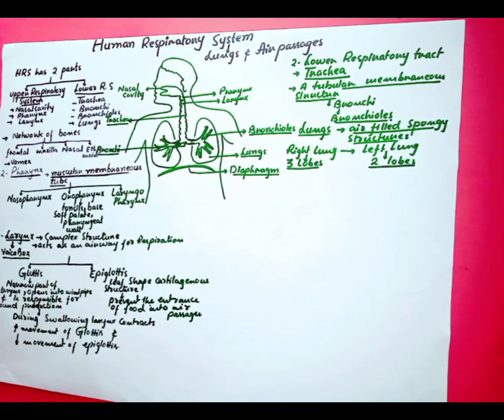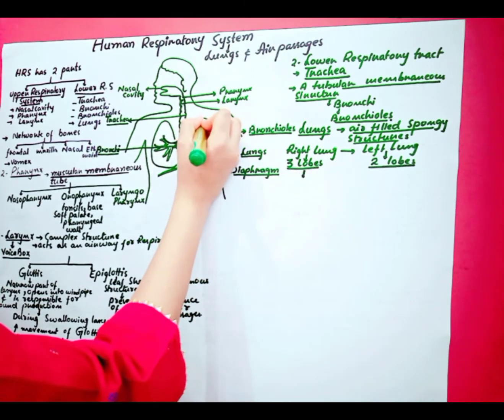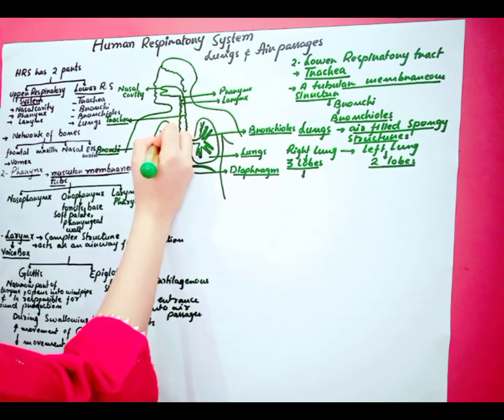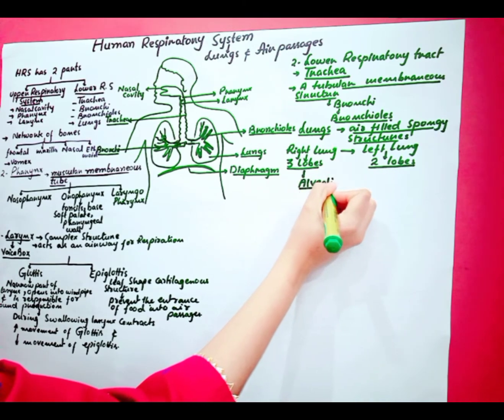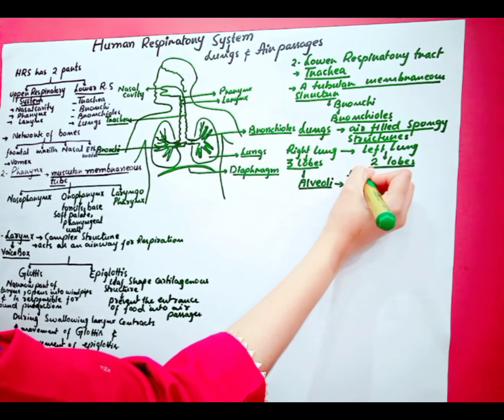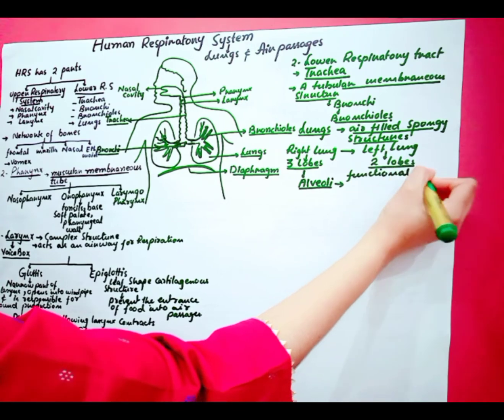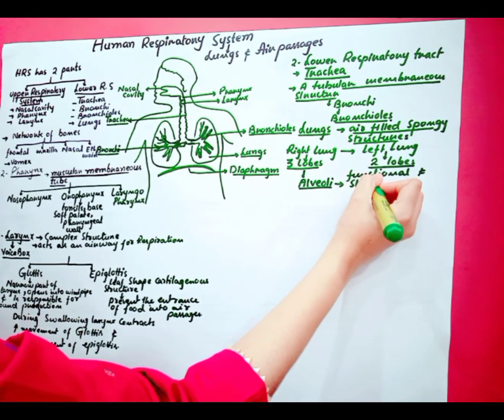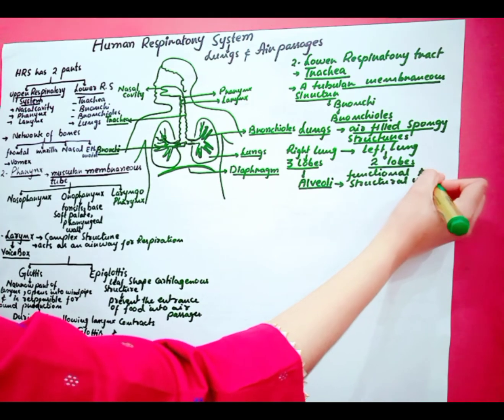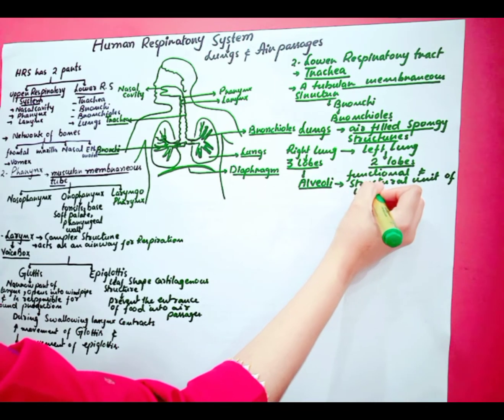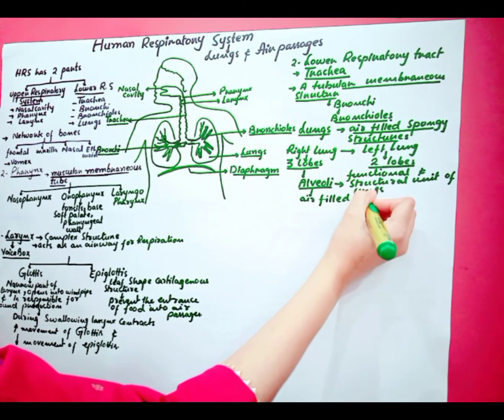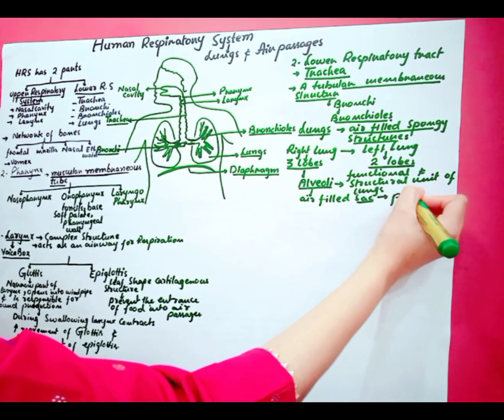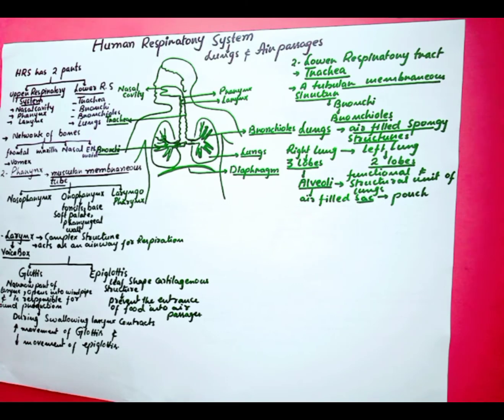Within the lungs, these bronchioles eventually end up in a cluster of microscopic structures which are called alveoli. Alveoli are the functional and structural unit of lungs. These are air-filled sacs. Sac means pouch.